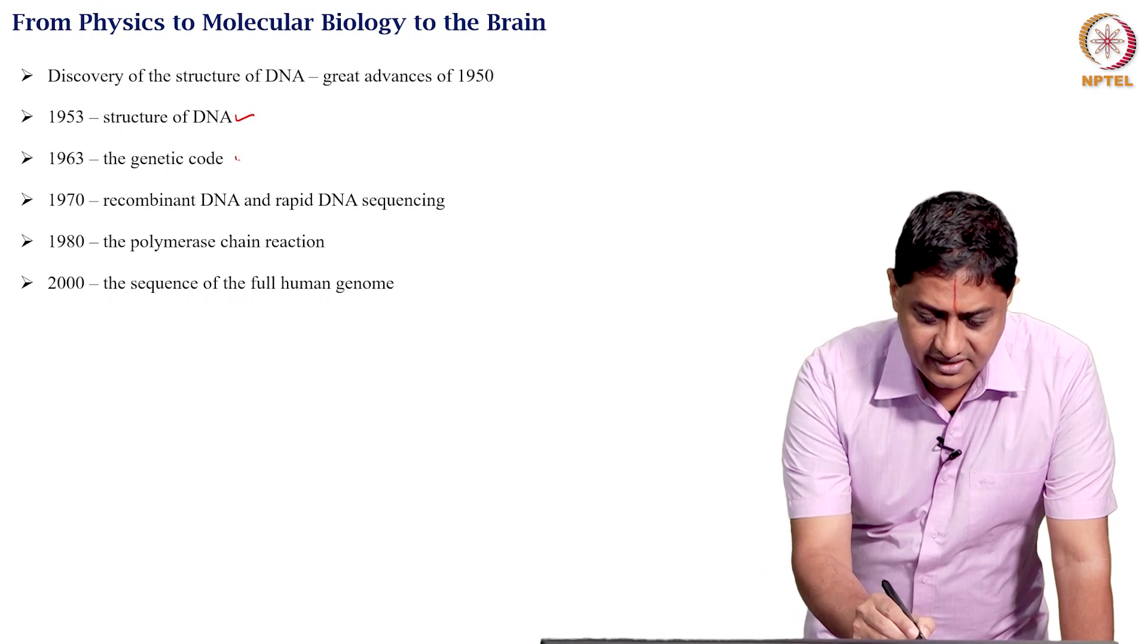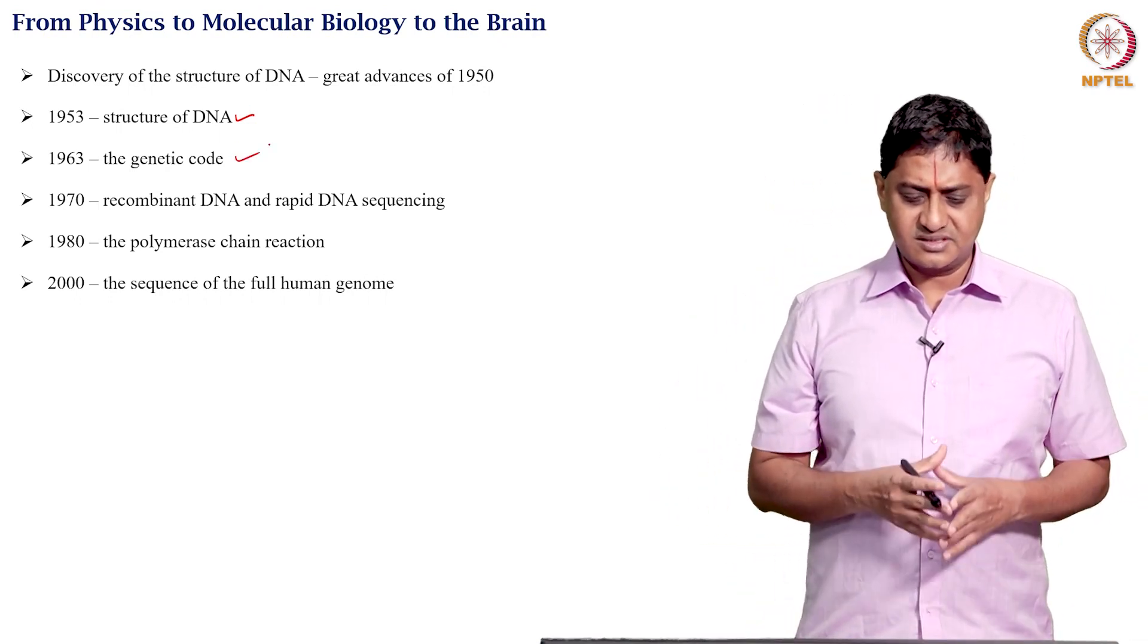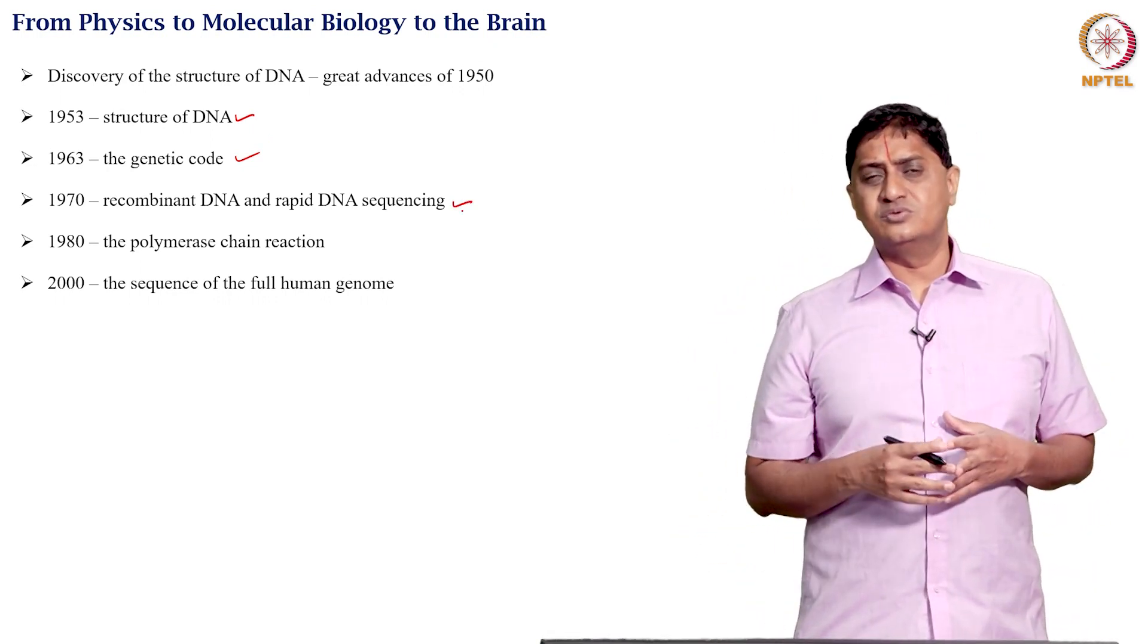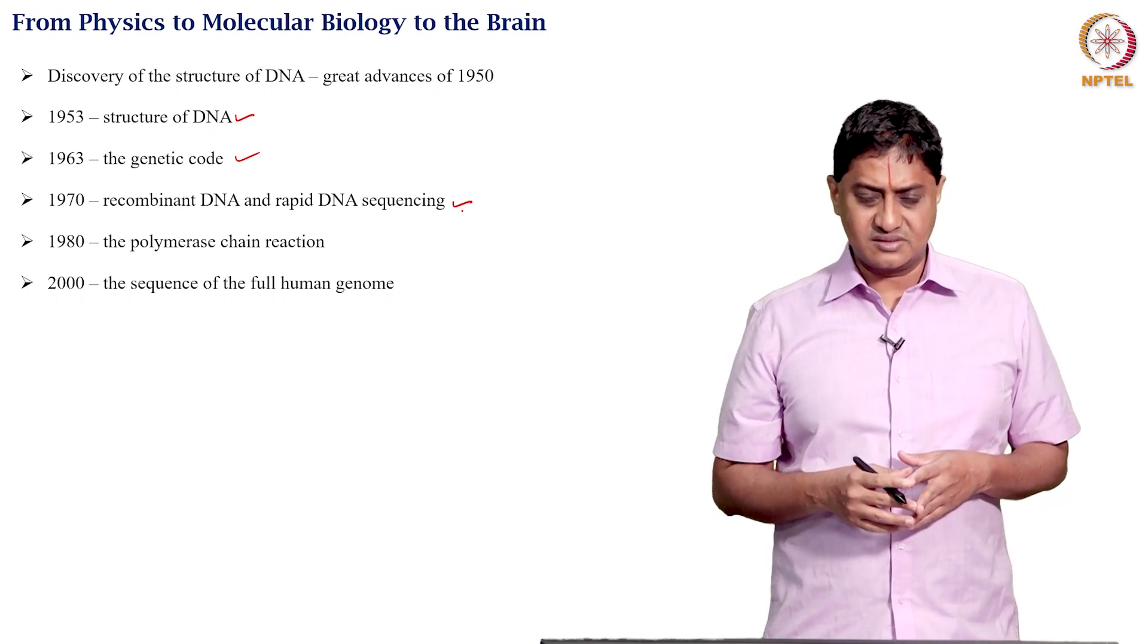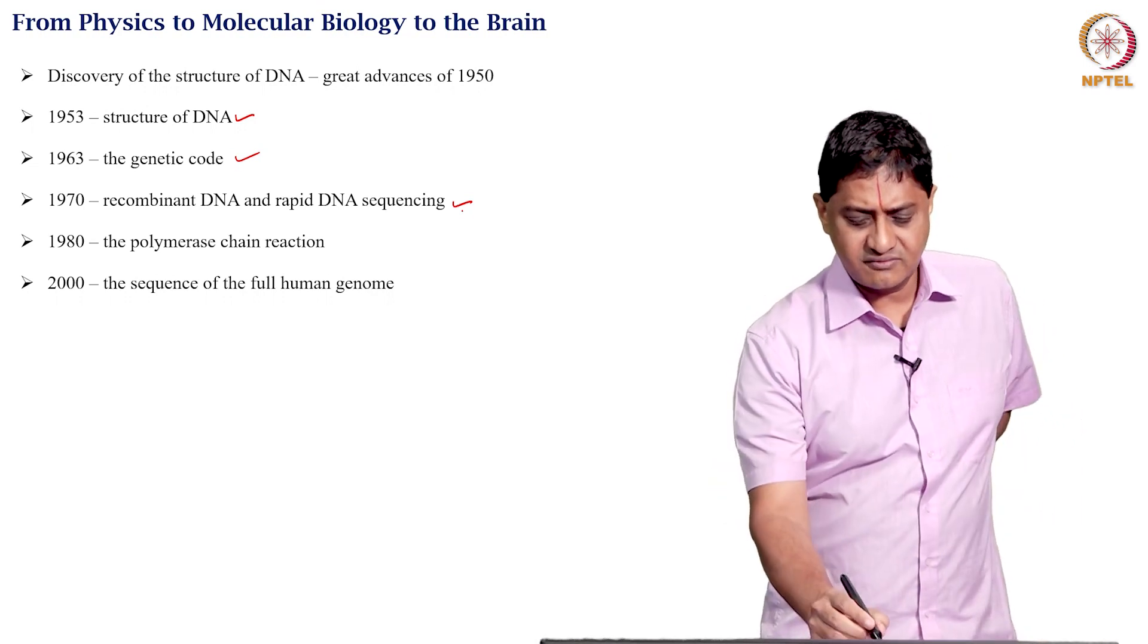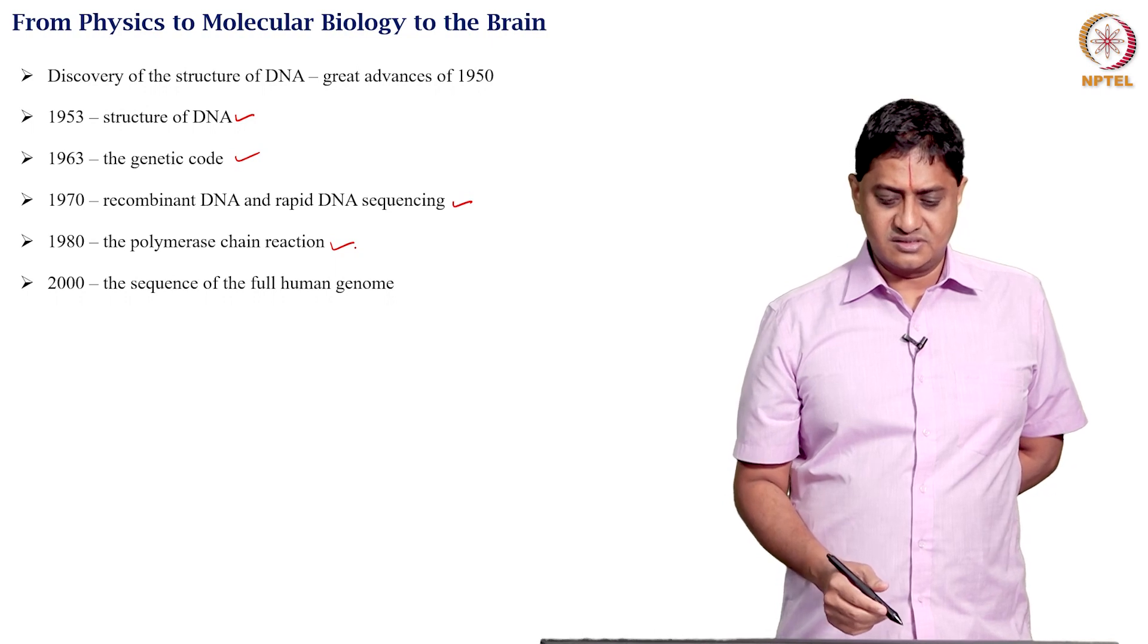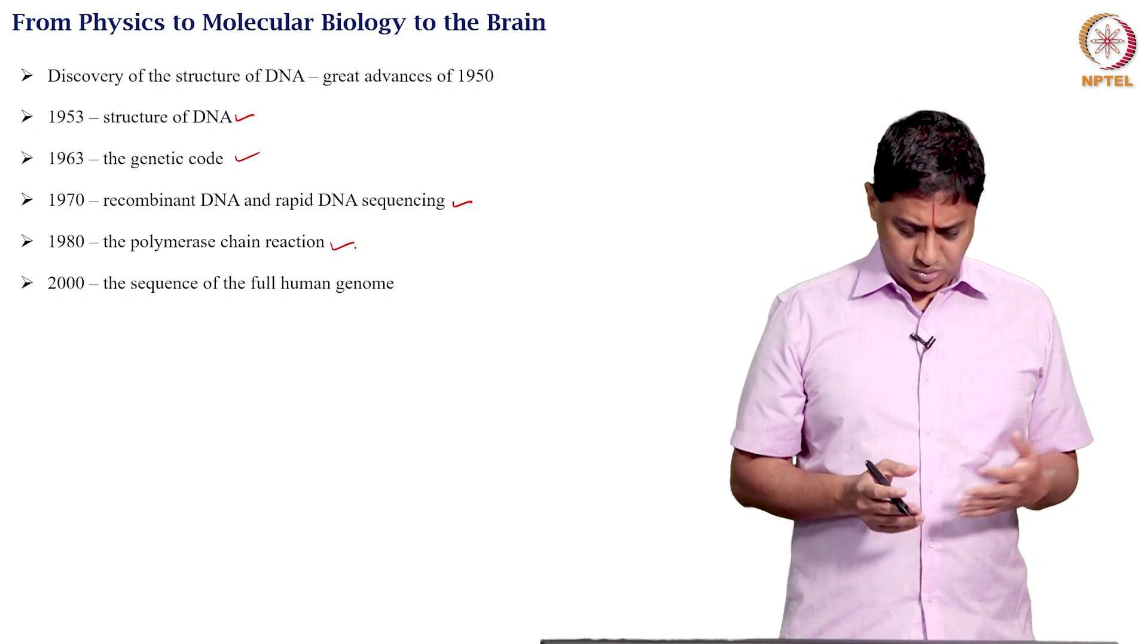Then in the 1960s, you had the genetic code that was discussed. The 1970s, recombinant DNA and methods to quickly sequence DNAs or rapid DNA sequencing were discussed or described. In the 1980s, there was the PCR, the polymerase chain reaction. In 2000, we actually had the sequencing of the entire human genome.